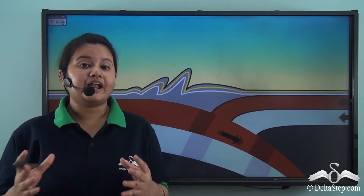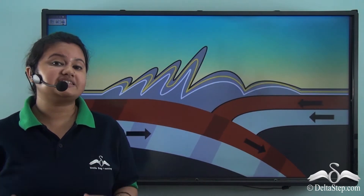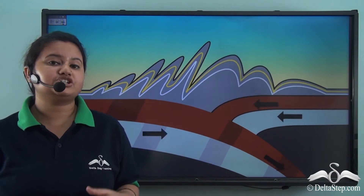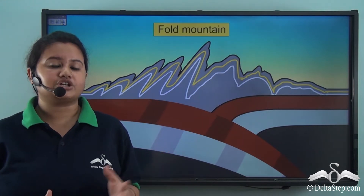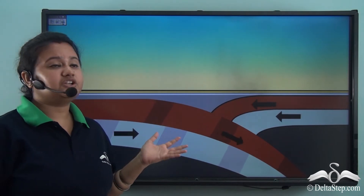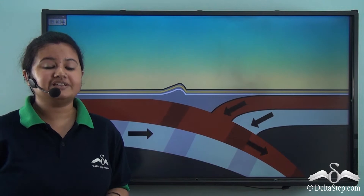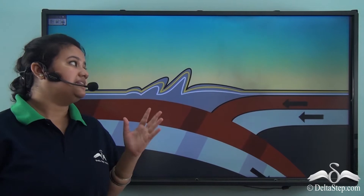Endogenic forces are the internal forces that are active inside the Earth. In this video, we can see the collision of two tectonic plates, which represents the endogenic forces. This video shows how the overlying rocks or the land surface gets crumbled and folded up to form a fold mountain. This is how the endogenic forces change the land surface.